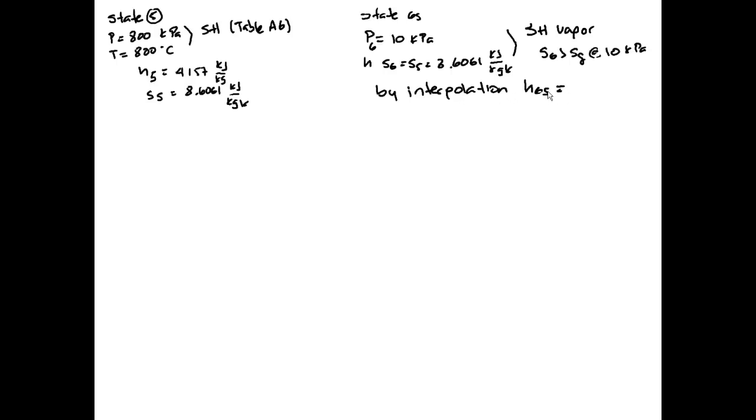By interpolation, h6S is 2747.4 kilojoules per kilogram. Using the isentropic efficiency of 0.8 and solving for h6 actual, we find that h6 actual is 3029.3 kilojoules per kilogram.